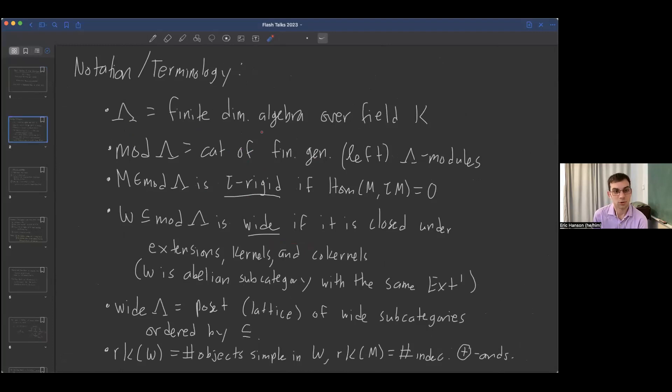To set some notation and terminology, lambda is a finite dimensional algebra over some field K. Mod lambda is the category of finitely generated left modules. As Bethany defined, a module M is called tau rigid if hom of M to the Auslander-Reiten translation of M is zero. A full subcategory closed under isomorphisms is called wide if it's closed under extensions, kernels, and cokernels. Another way to say this is that it's an abelian subcategory with the same Ext1.